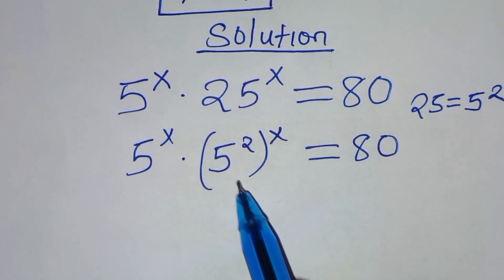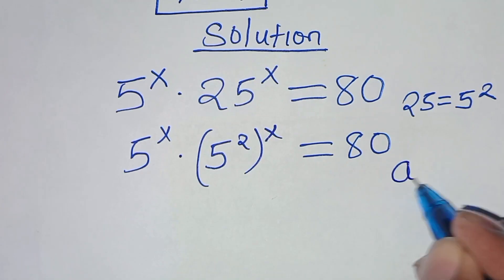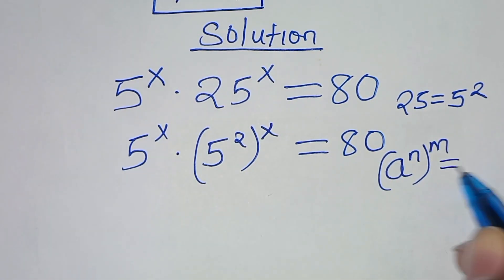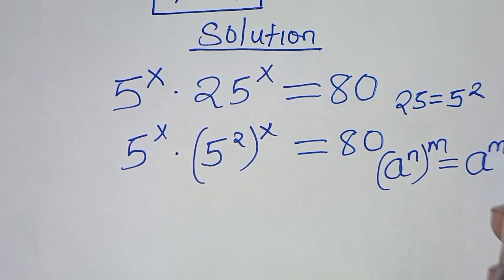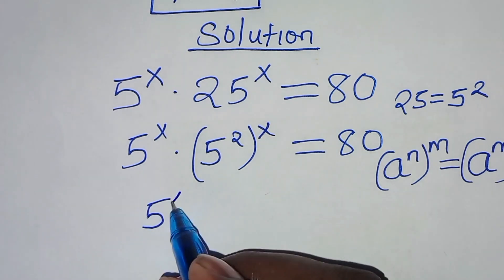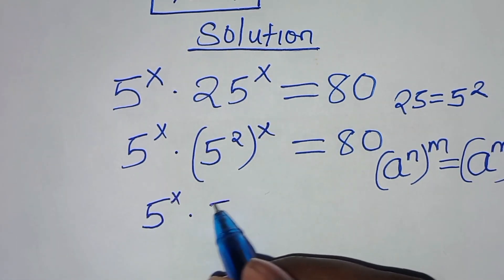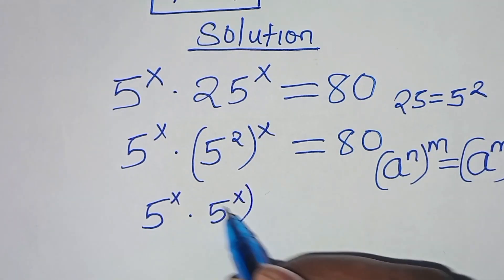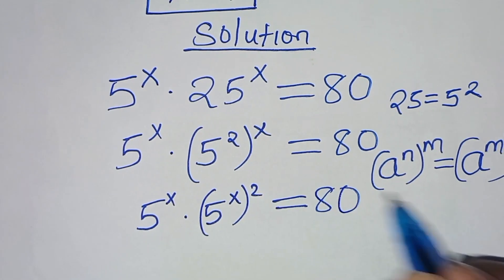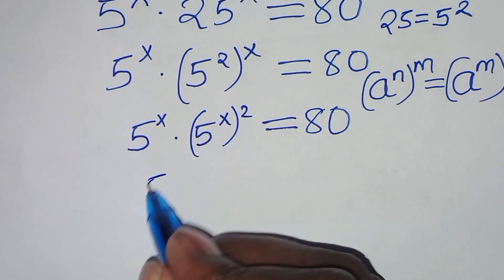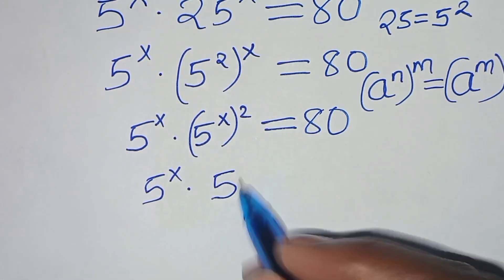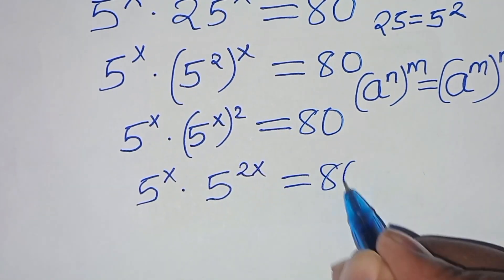The next step is that 5 to the power 2 raised to power x is in the form of a to the power n raised to power m, which we can express as a to the power m raised to power n. So here we have 5 to the power x times 5 to the power 2x. This is equal to 80.